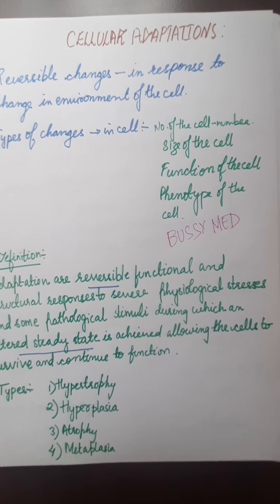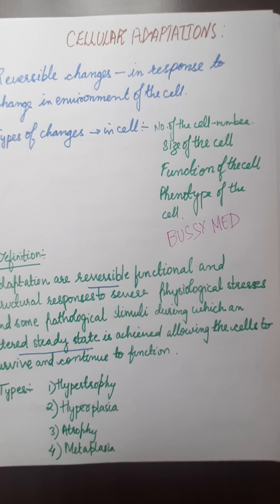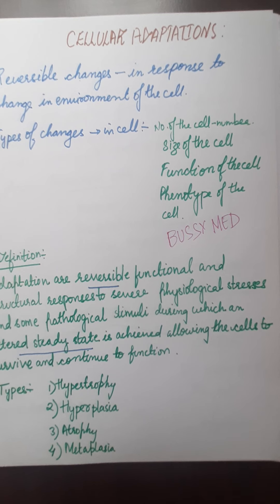Hello friends, welcome to this channel. My name is Munshah Khatun. In my previous video I discussed about cellular adaptations — its definition and the types of cellular adaptation in brief. I also discussed in which type of cells hypertrophy is taking place and in which type of cells hyperplasia is taking place. In non-dividing cells, or permanent cells — for example neurons, cardiac muscle, skeletal muscle — hypertrophy is taking place to adapt the increased workload, that is, increase in size.